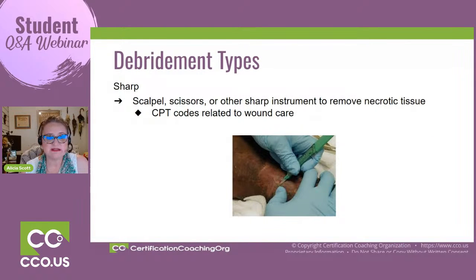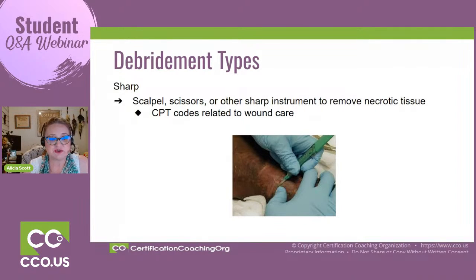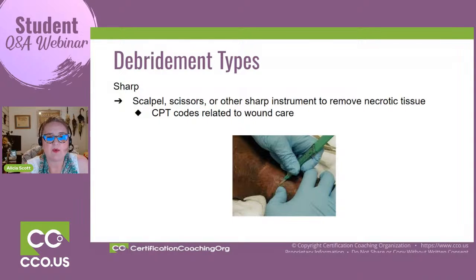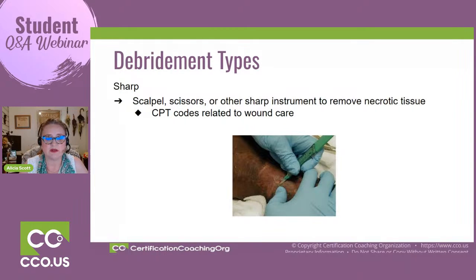Sharp debridement is when you use a scalpel, scissors, or anything sharp to remove the necrotic tissue. When you look at the CPT codes for that, you're going to be looking at wound care CPT codes. That doesn't mean you're going to the operating suite; however, they will try to do that in a sterile environment. They are cleaning up and getting rid of debris as well as non-viable tissue.